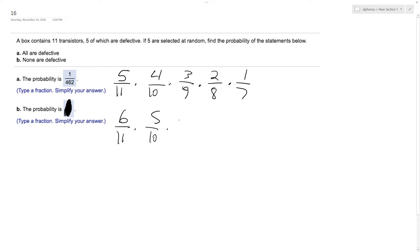So 5/10 times 4/9 times 3/8 times 2/7. And when you multiply this together and simplify it out, you should end up with 1/77.